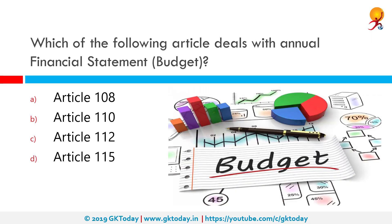Which of the following articles deals with the annual financial statement or budget? That would be Article 112. According to Article 112 of the Indian Constitution, the union budget of a year, referred to as the annual financial statement, is a statement of the estimated receipts and expenditure of the government for that particular year.